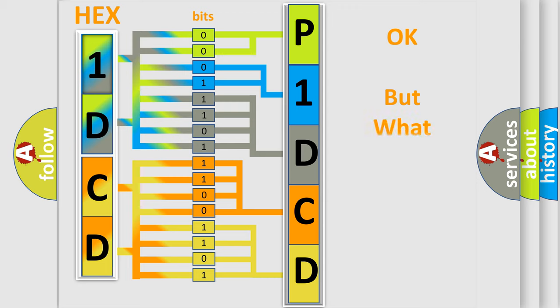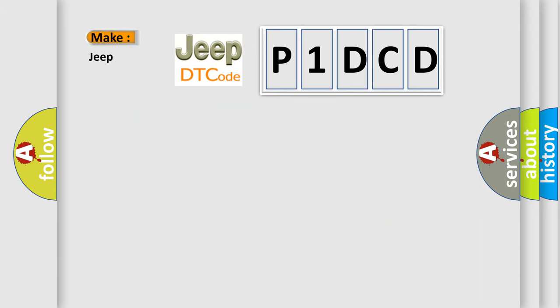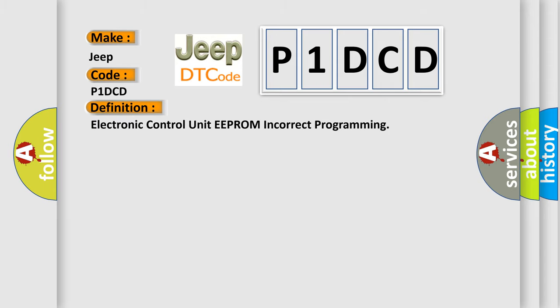The number itself does not make sense to us if we cannot assign information about what it actually expresses. So, what does the Diagnostic Trouble Code P1DCD interpret specifically for Jeep car manufacturers? The basic definition is Electronic Control Unit EEPROM Incorrect Programming.